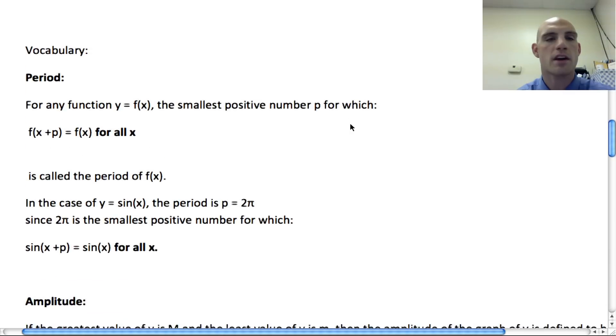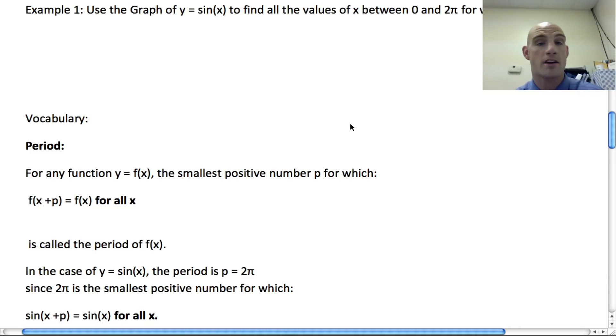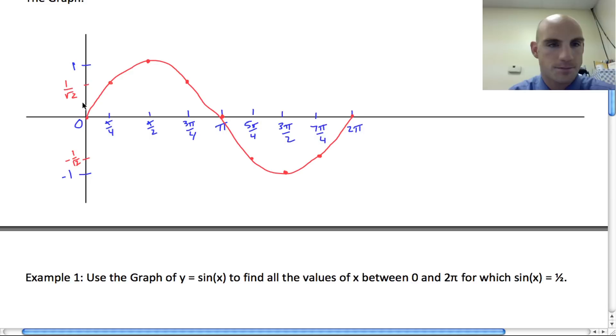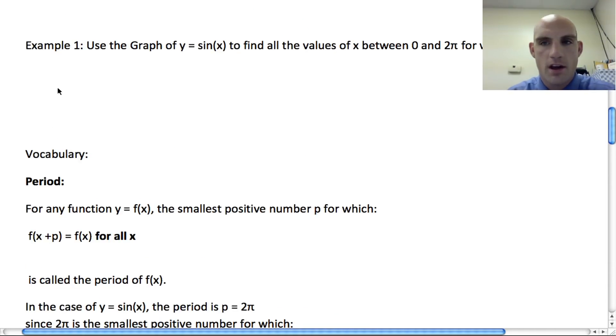When we look at example one, it says use the graph of y = sin(x) to find all the values of x between zero and 2π for which sin(x) is equal to 1/2. What we would do here is we would say, well, where is 1/2? One half is halfway up, so about right here. We want all the values where this is true. If we look at what happens, we can use our unit circle to help us out. Because if it equals 1/2, we know that this right here is about π/6, because our unit circle tells us. And this is going to be 5π/6. So x equals π/6 and 5π/6.